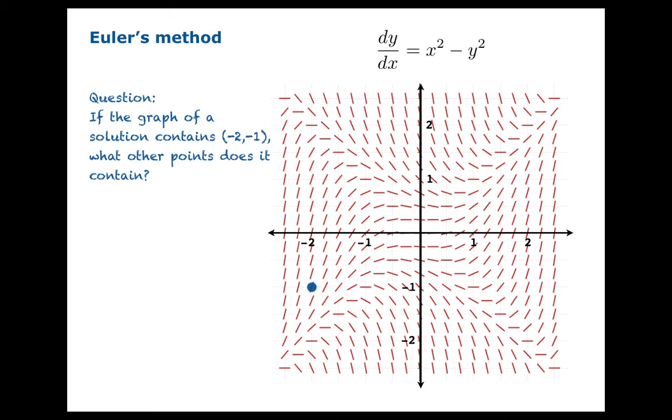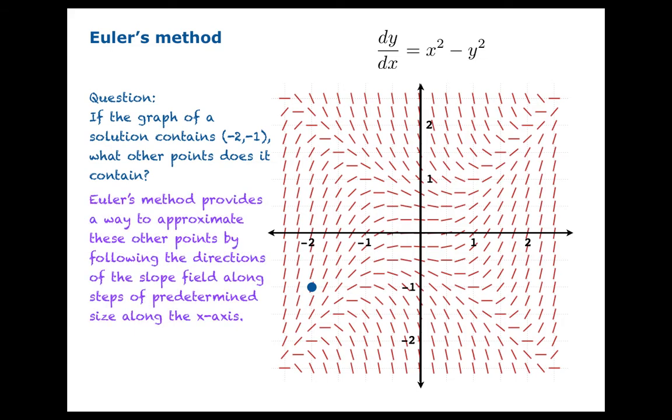So if we knew we had a solution that went through the point negative 2, negative 1, we might be interested in figuring out where else the solution curve would go through. And Euler's method provides a way to approximate these other points.